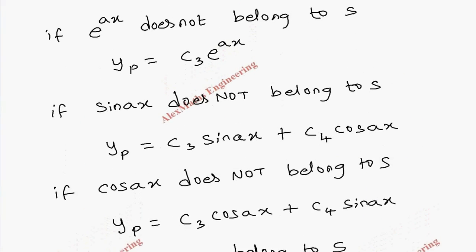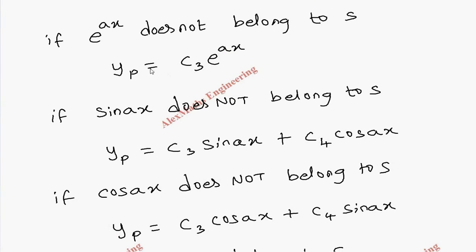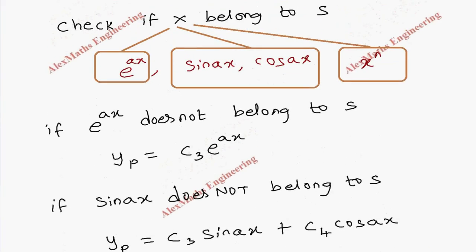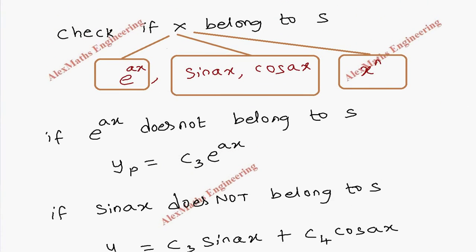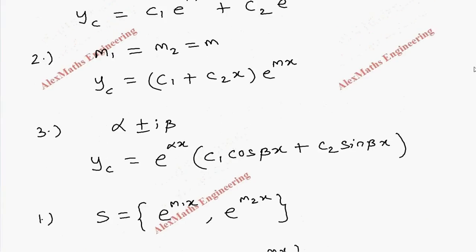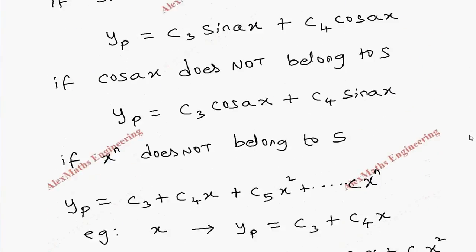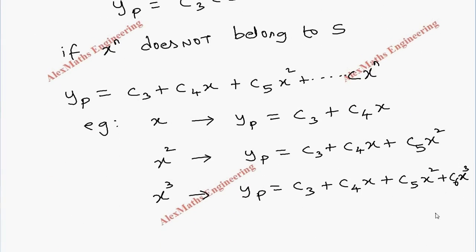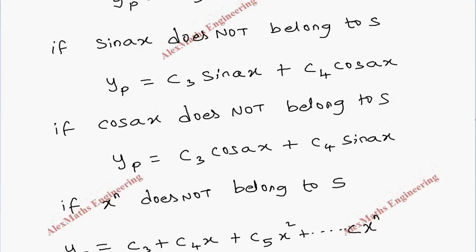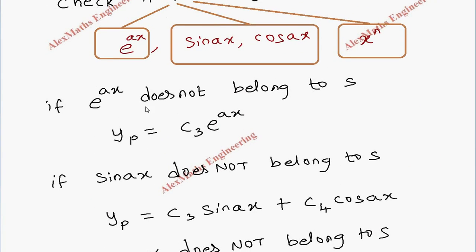So, till now we have discussed the case when the solution set does not contain the function given on the right-hand side of the differential equation. Now, suppose if the term belongs to S, then we assume the same particular integral form but we multiply by x.